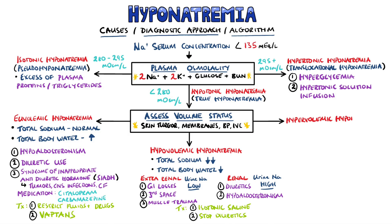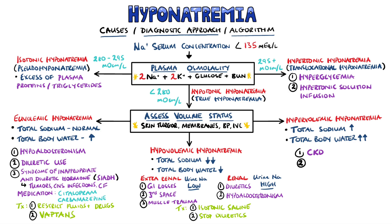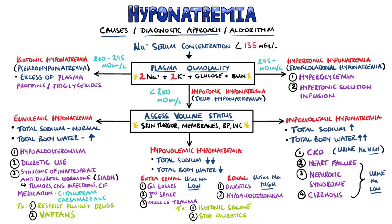Hypervolemic hyponatremia comes from an increase in both total body sodium and total body water, but more so water than sodium, causing the concentration of sodium to drop. The causes include chronic kidney disease, heart failure, nephrotic syndrome and cirrhosis. Typically in chronic kidney disease patients, the urinary concentration of sodium will be increased, while in the others it will be lower due to the dysfunction of the kidneys.